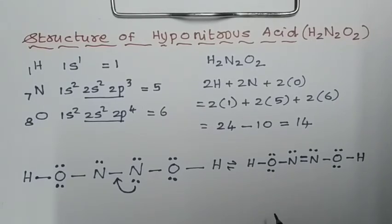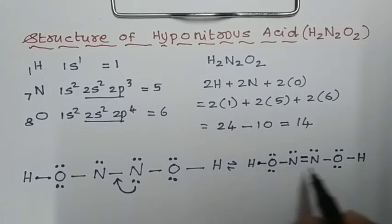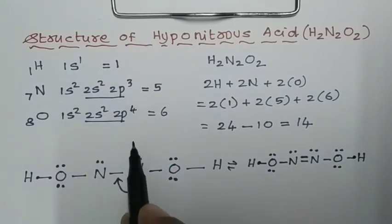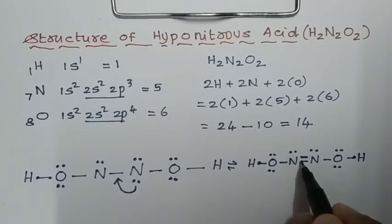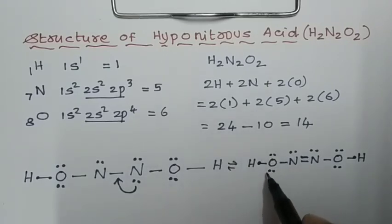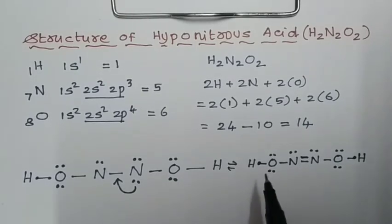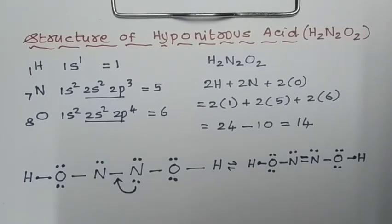Now we count the number of electrons around each atom to verify. Hydrogen has 1 electron in the bond — correct. Each nitrogen has 5 electrons around it (counting shared electrons as contributing 1 each) — correct. Each oxygen has 6 electrons around it — correct. There is no excess positive or negative charge on hyponitrous acid. This is the complete Lewis structure of hyponitrous acid.